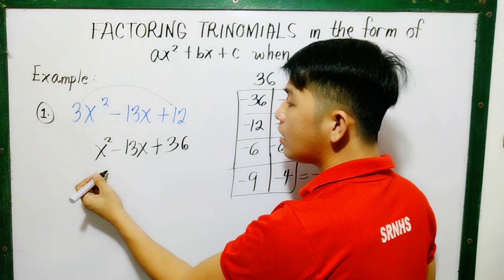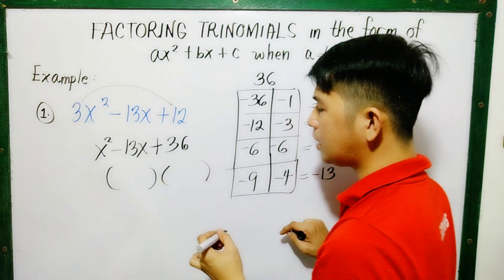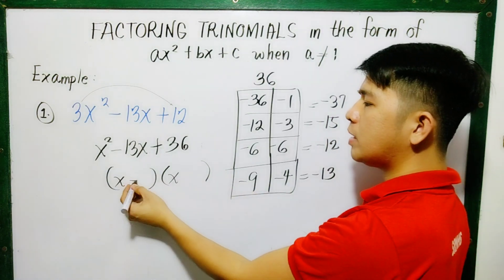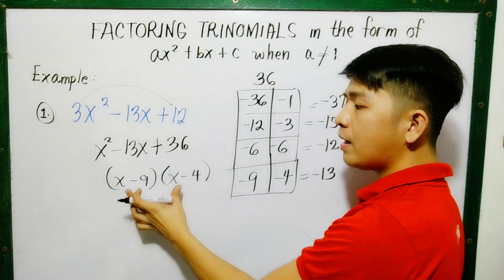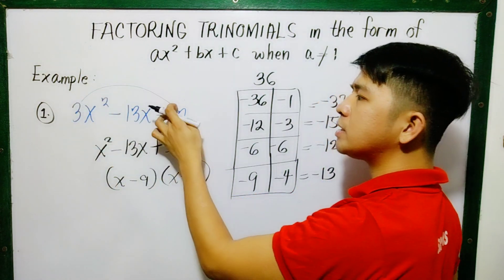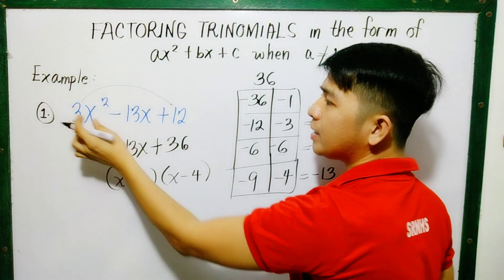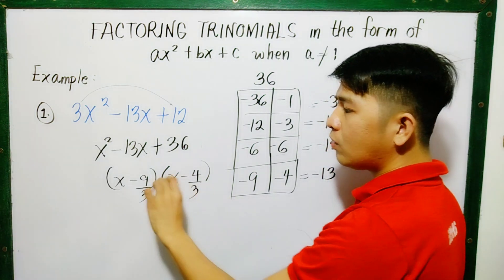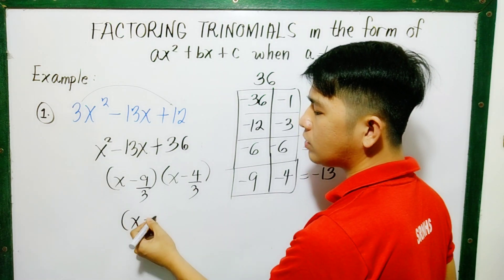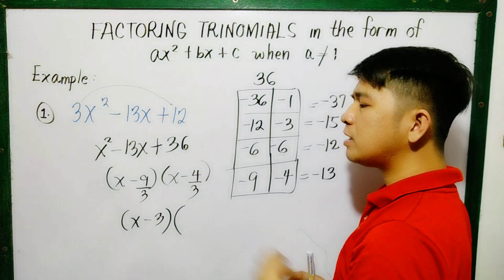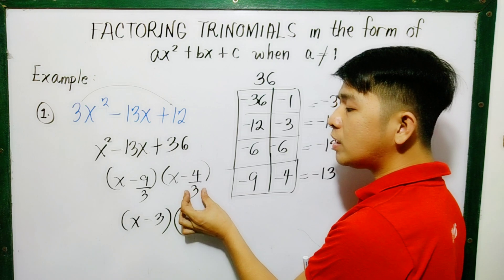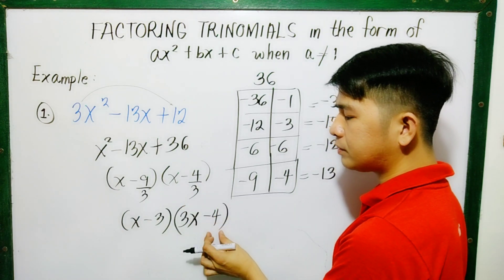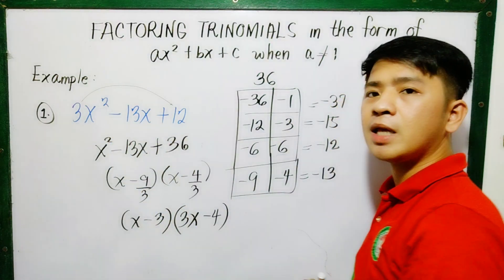Since the middle term is negative 13, we'll take negative 9 and negative 4. So the factored form, we put parentheses. Factors of x squared are x and x. Factors of negative 36, we got negative 9 and negative 4. After that, since we multiplied by 3 to the last term, we'll now divide by what we multiplied earlier, which was 3, to both last terms. If they're divisible, divide them. So this becomes x minus 3. Since when you divide this it becomes a decimal, just remove the 3 and multiply it to the other side. So it becomes 3x minus 4. This is now the factors of our 3x squared minus 13x plus 12.